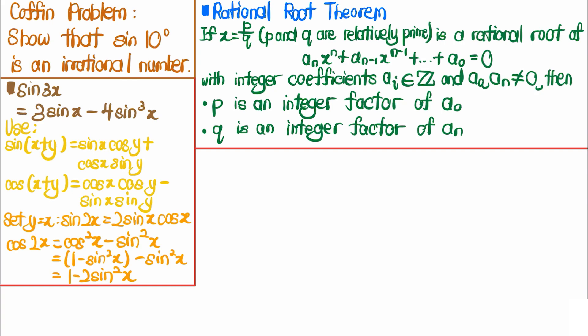The reason we want the triple angle identity is that it enables us to relate sine of 10 degrees to sine of 30 degrees, which equals 1/2. Importantly, the triple angle identity gives us a cubic equation containing sine of 10 degrees, and we can apply the rational root theorem to show that sine of 10 degrees is irrational.